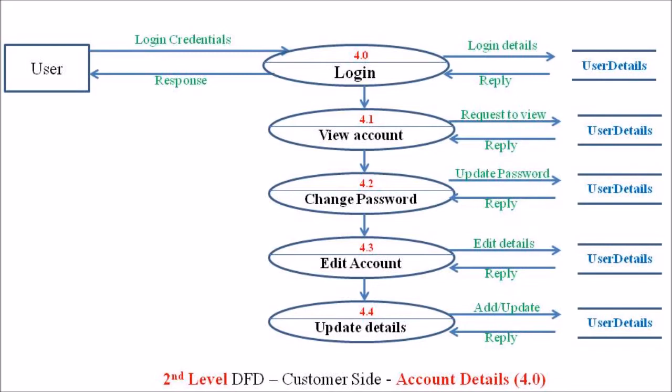If the user wants to change other account details — such as email address, name, or address — they can go to process 4.3. In process 4.3, the user can edit their details, and those edited details are reflected in the user detail data store.